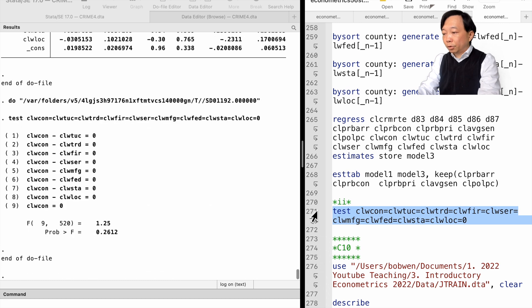The F statistic of the joint significance is 1.25 and its p-value is 0.26. The wage variables are not jointly significant at the 10% level. It suggests that we should drop them from the model.